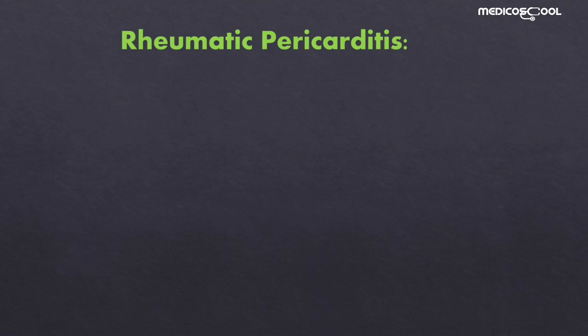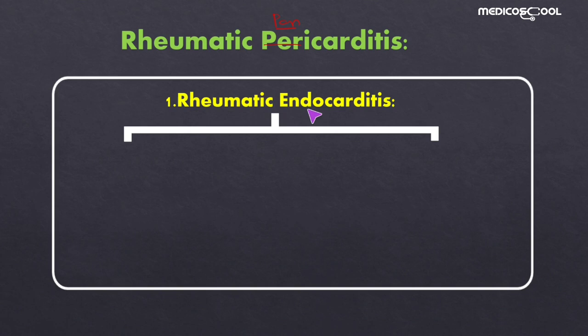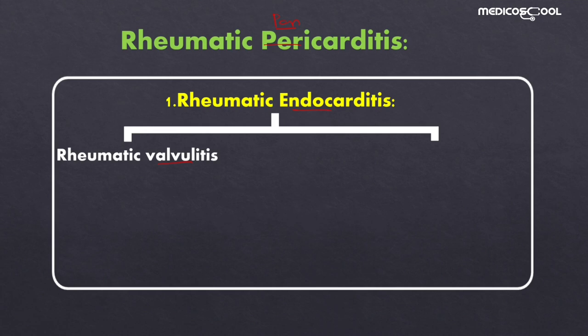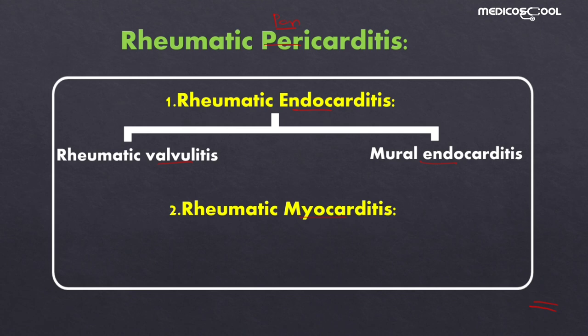The most common organ involved in acute rheumatic fever is the heart, and when it is involved it is known as rheumatic heart disease. This is called rheumatic pancarditis because all three layers are involved. It includes rheumatic endocarditis, rheumatic myocarditis when it involves the myocardium, and rheumatic pericarditis when it involves the pericardium. Rheumatic endocarditis may involve the valves — known as rheumatic valvulitis — or the mural endocardium covering the chambers.